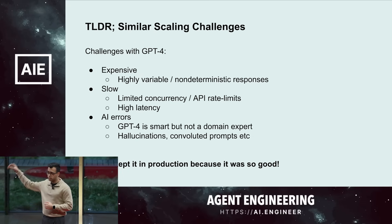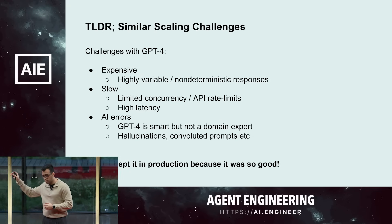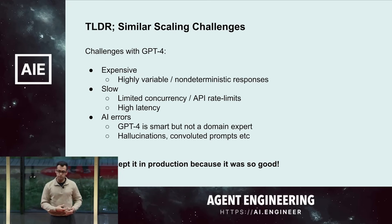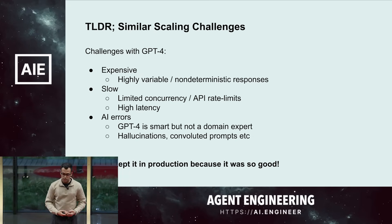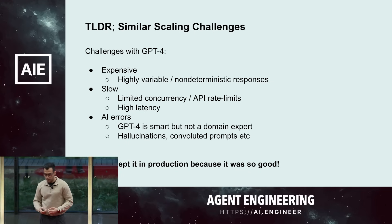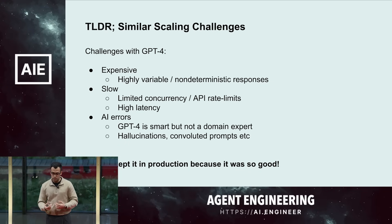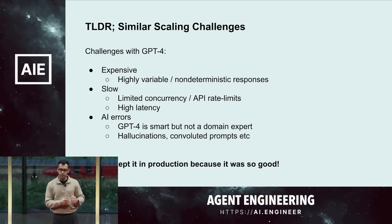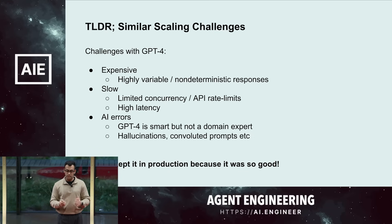Similar to human errors but of a different nature, we had AI errors — hallucinations that were hard to catch. We just couldn't scale with this kind of system, though we still kept it in production because for specific use cases it was actually really good.